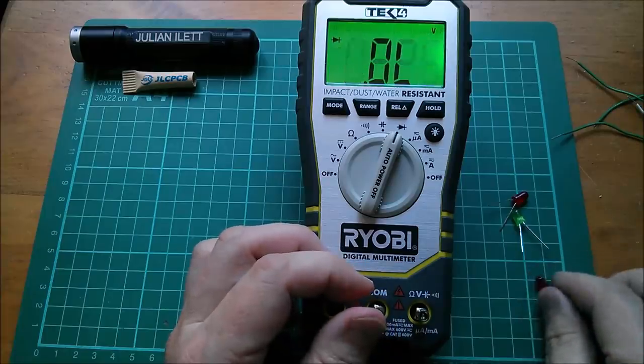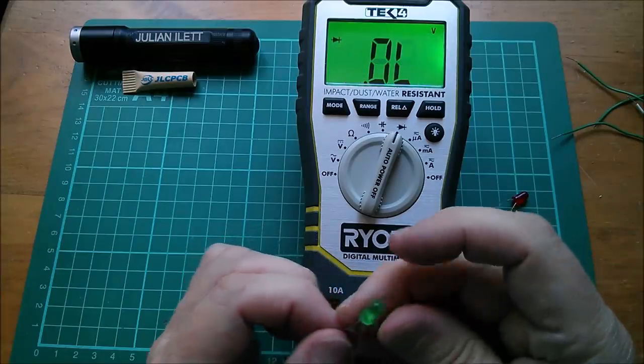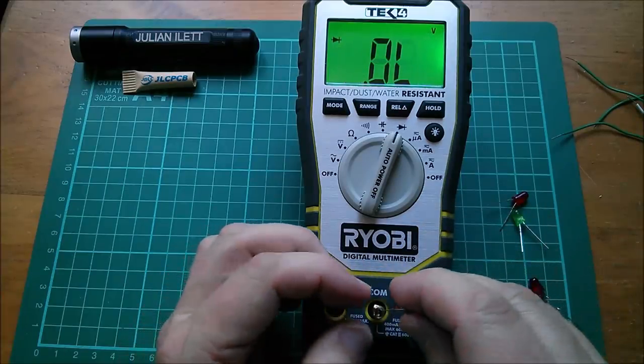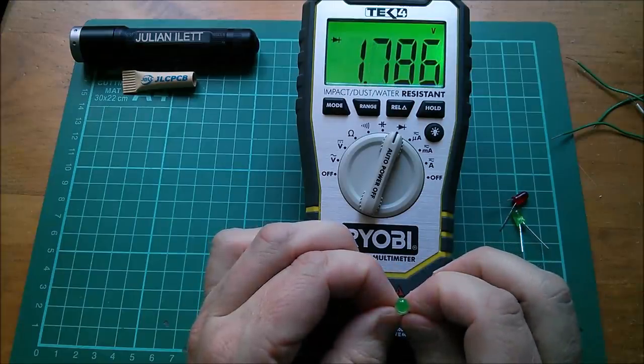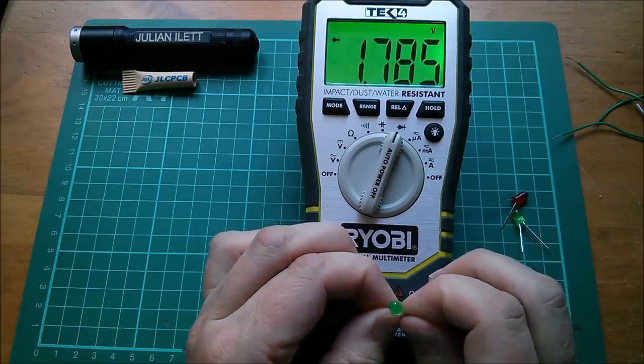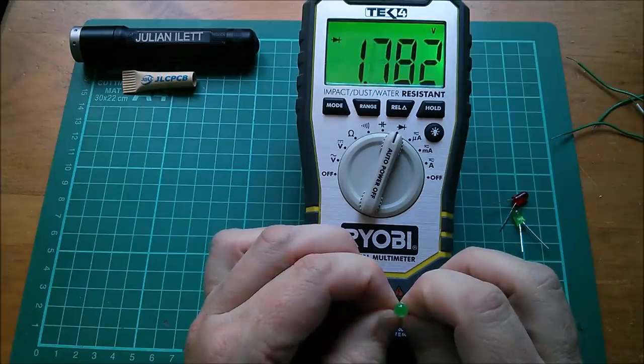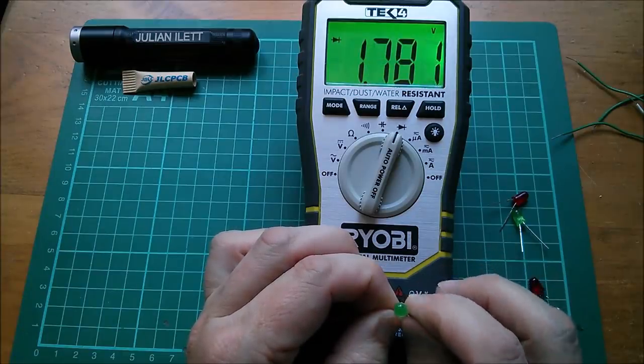That was why the green was lighting up. Now what's the old green one? It will be that way around. Well that one seems to be okay with a forward voltage of 1.78.